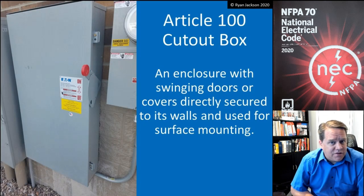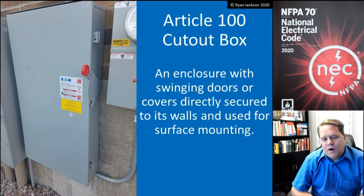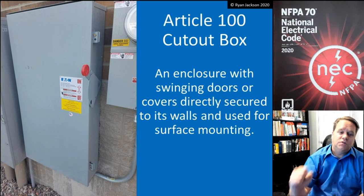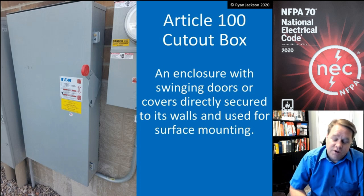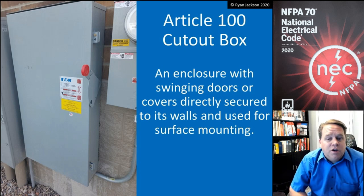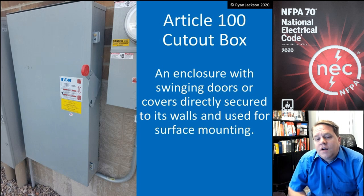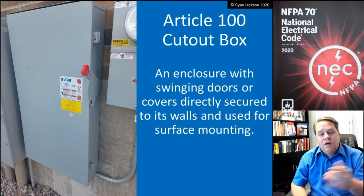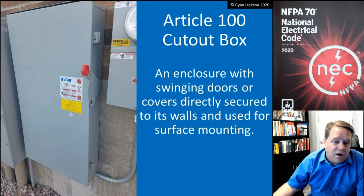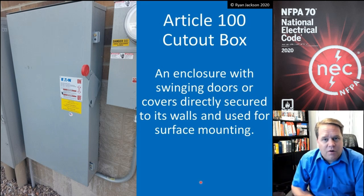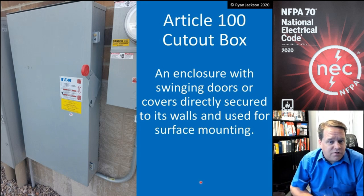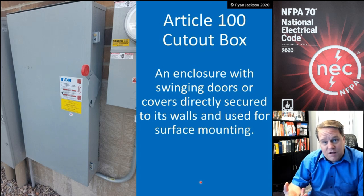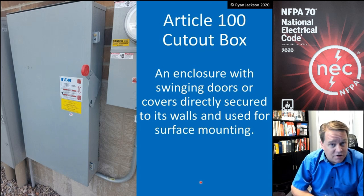A cutout box — why do we call it a cutout box? Where do you go when you need to cut out the power? You go to the cutout box. It's an enclosure with swinging doors or covers that are directly secured to its walls and is used for surface mounting. Most disconnecting means and disconnect switches are installed in cutout boxes, and those are also regulated in Article 312.